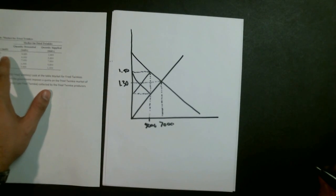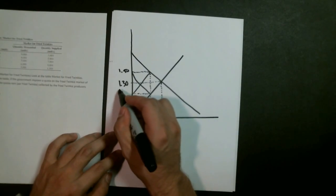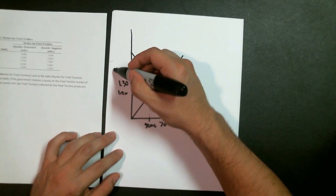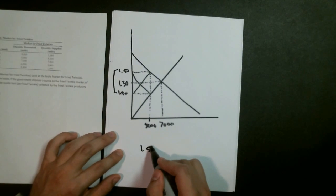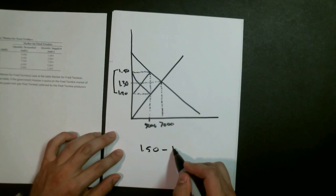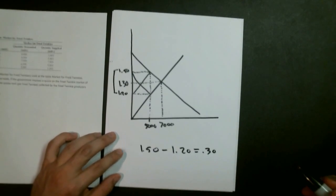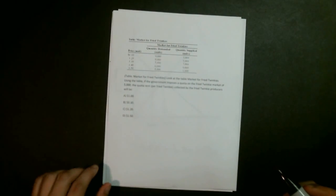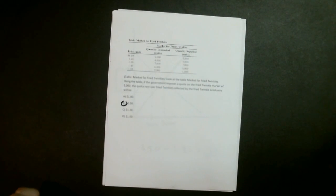Now the price they're supplied at is $1.20, because at $1.20 the producers will supply 5,000. What we're looking at here is that difference. So $1.50 minus $1.20 equals $0.30. That is why, if we come back here, the answer is B, $0.30 of quota rent per fried Twinkie collected by the fried Twinkie producers.